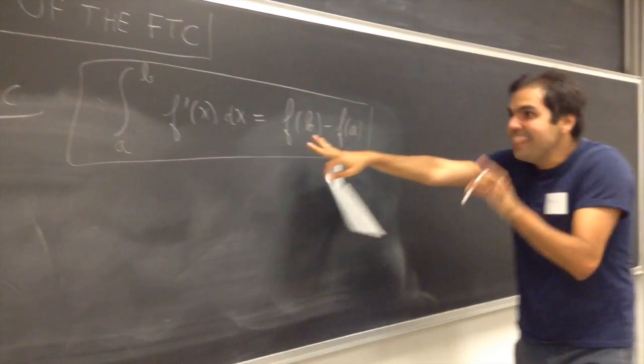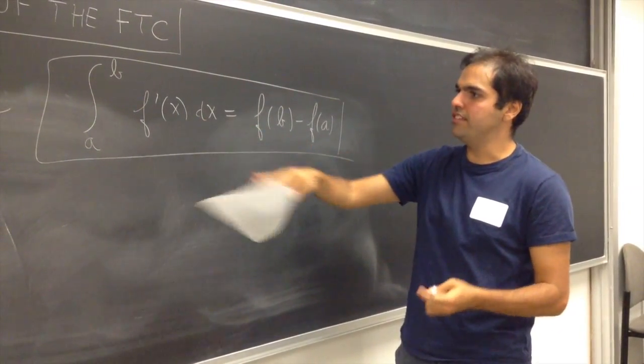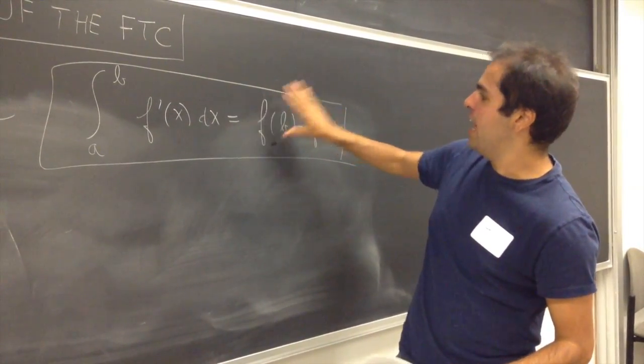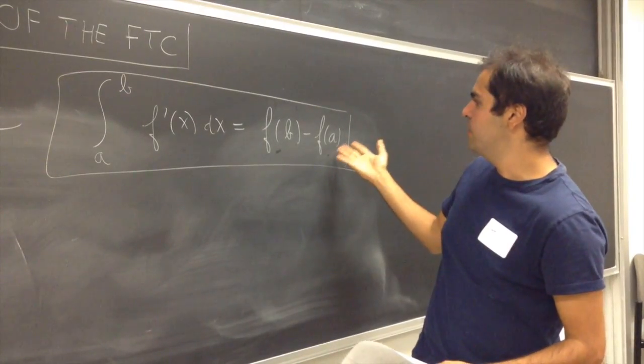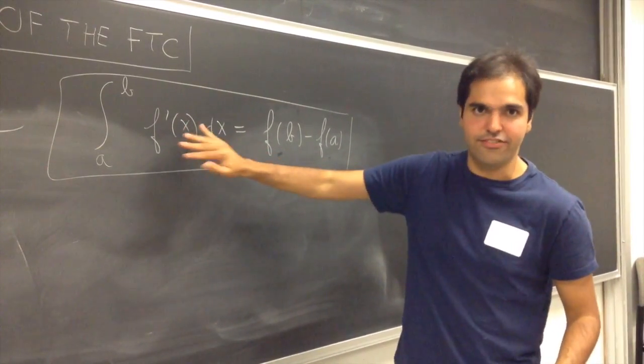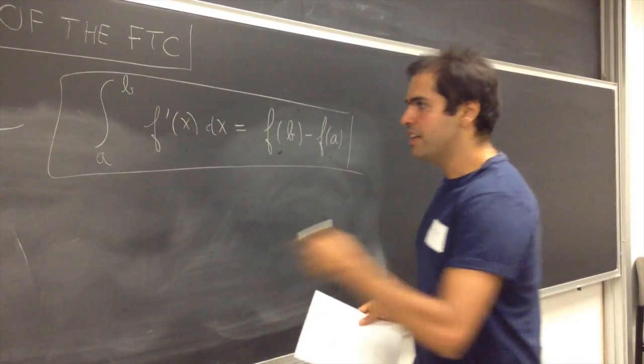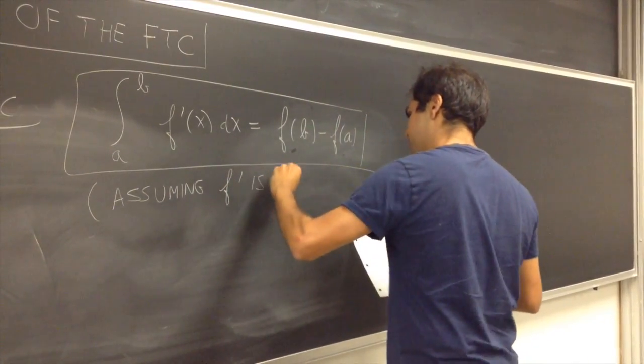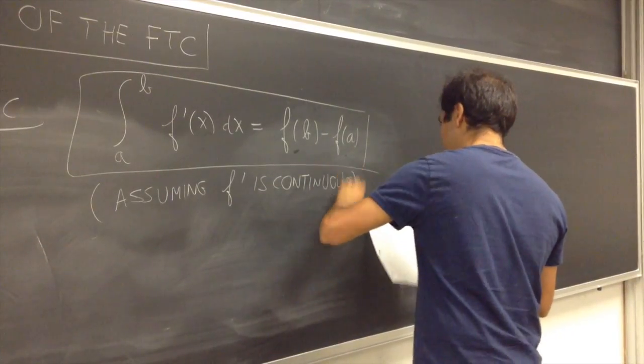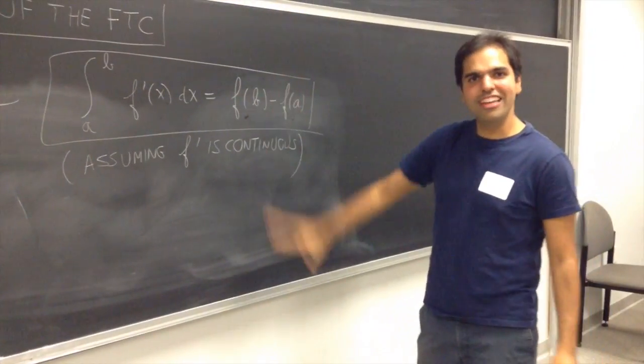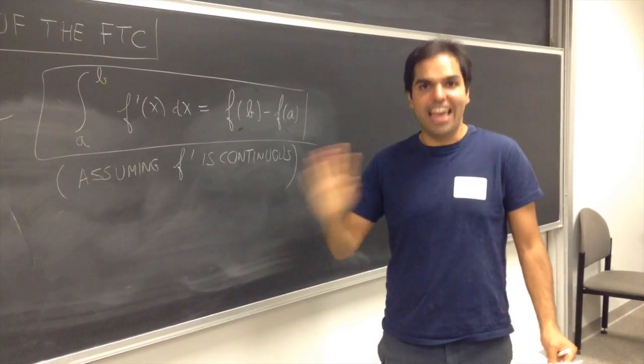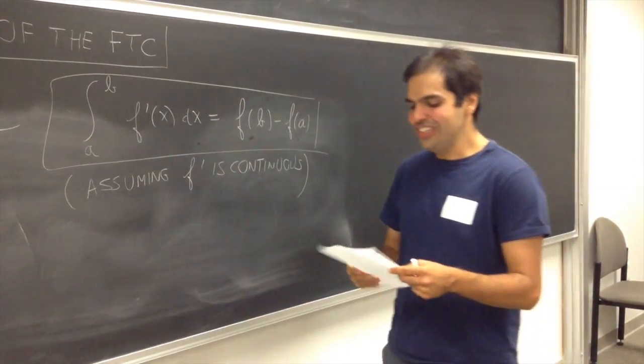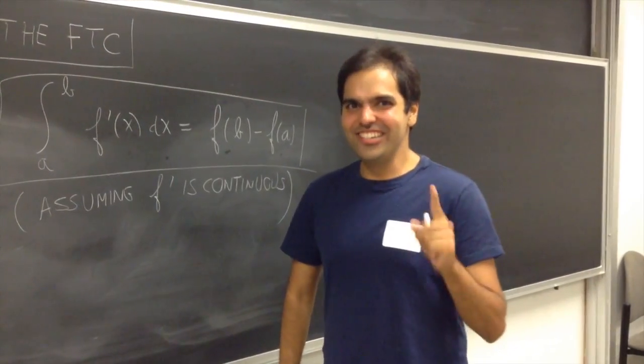And as I said, this is slightly more specific than the regular FTC because regular FTC says integral from a to b of f of x is equal to an antiderivative of f at b minus an antiderivative of f at a. This assumes that f is differentiable. And we also need to assume that f' is continuous.